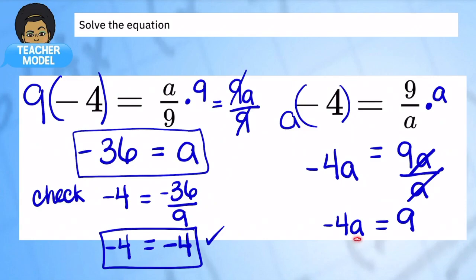So think through. So now I have, my goals are the same. I want this A by itself. I have negative 4 times A gives me 9. So what is the opposite of negative 4 times A? Instead of multiplying by negative 4, I'm going to divide by negative 4 on both sides. And that's going to give me A is equal to negative 9 fourths.